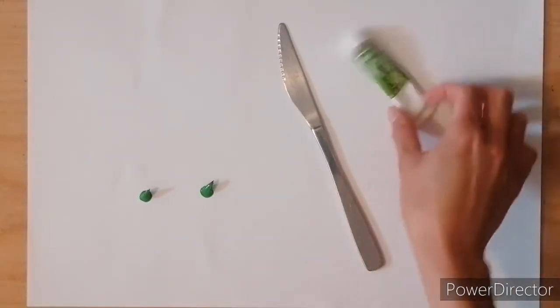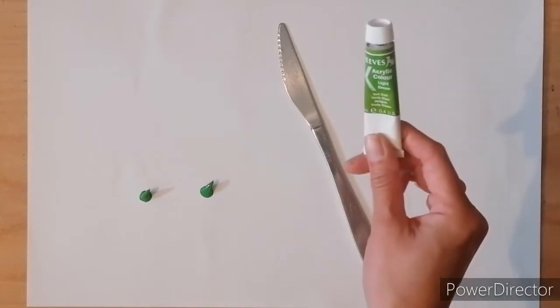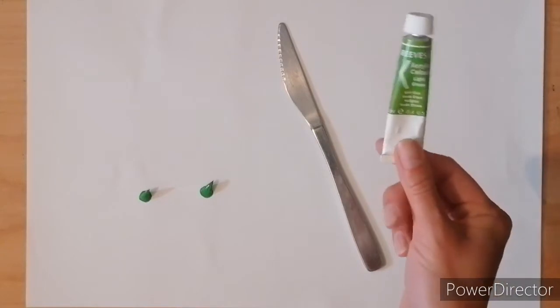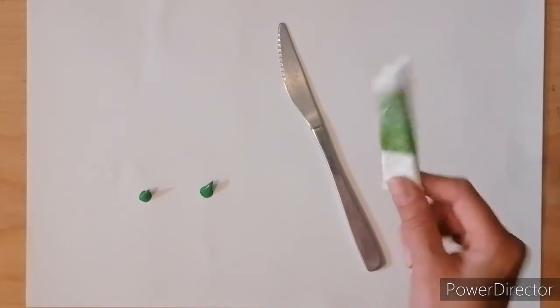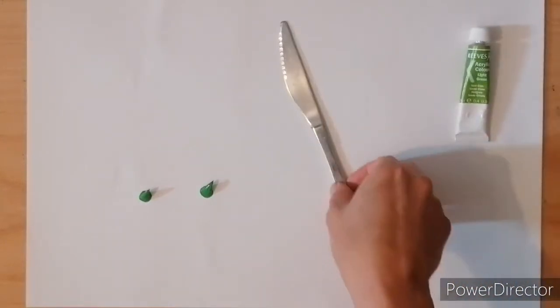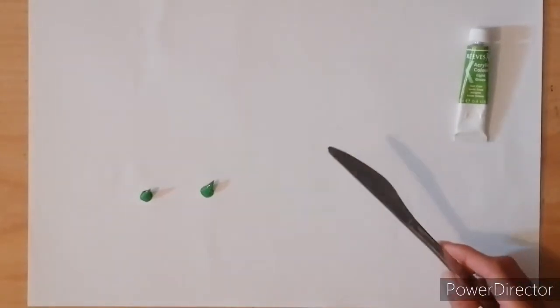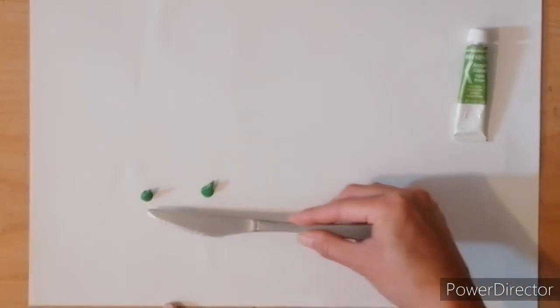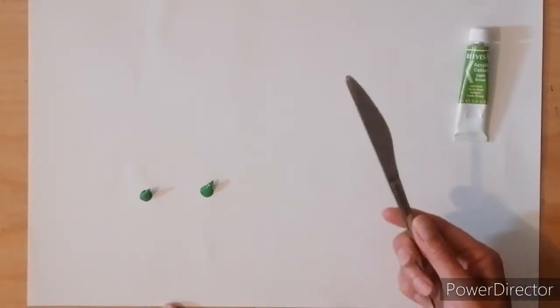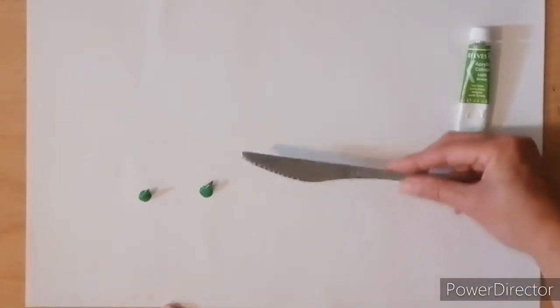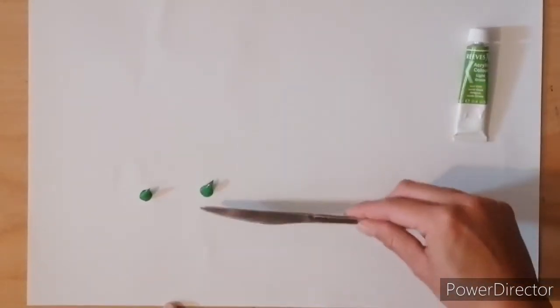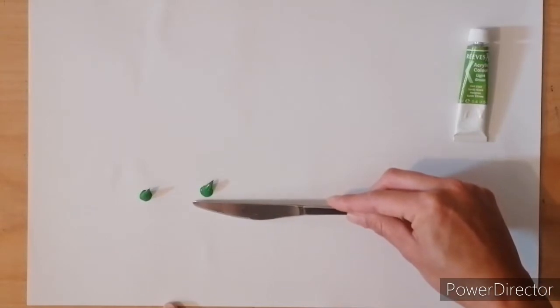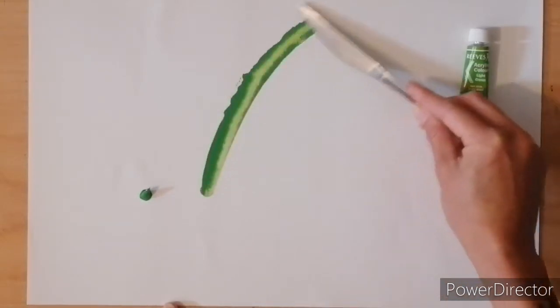I've put a couple of splodges of the light green paint. The paint that I've got today is light green acrylic. But as I said earlier, if you've only got poster paint, watercolour, oils even, experiment. Whatever paint you've got, give it a go. So I've done a couple of splodges here of light green. I'm going to have a little practice now with the knife, holding it imagine a bit like you're spreading butter or jam really, and I'm going to spread it and drag the paint across up the page like so.